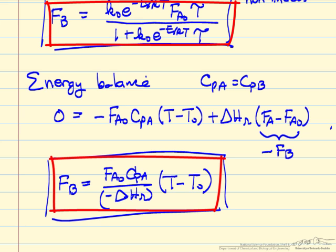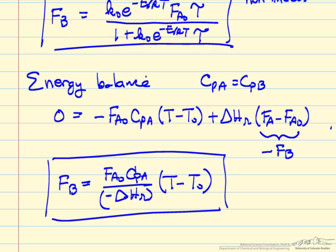And so now you'll notice we have two equations that have flow rate of B, the product, and the temperature of the product, the temperature in the reactor, and the rest are constants. So two equations, two unknowns, we should be able to solve these simultaneously.